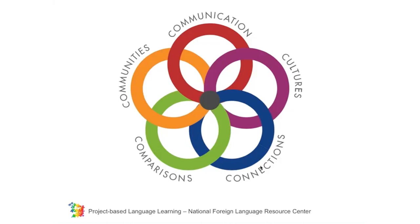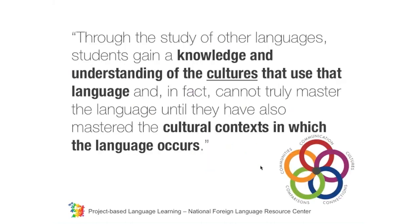Big C culture includes festivals, foods, costumes, and rituals, while little C culture is about appropriate behavior. But what's more useful about the five Cs analysis of culture is that now we look at culture as a triangle: products, practices, and perspectives.